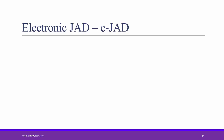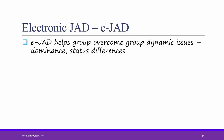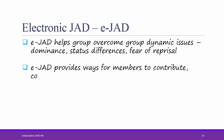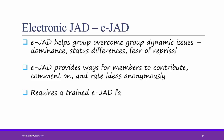One way to overcome group weaknesses is to use Electronic JAD, or EJAD. EJAD helps groups overcome group dynamic issues such as dominance, status difference, and fear of reprisal, since people sitting in groups are usually not as eager to share information as they are in one-on-one interviews. Electronic JAD provides ways for members to contribute, comment on, and rate ideas anonymously. However, it does require a trained EJAD facilitator and some specialized group work software.